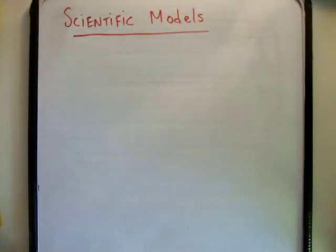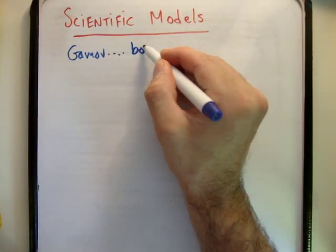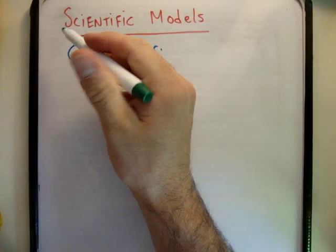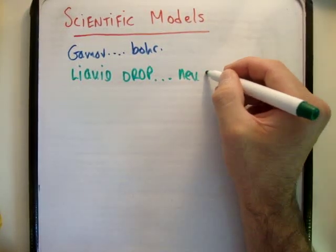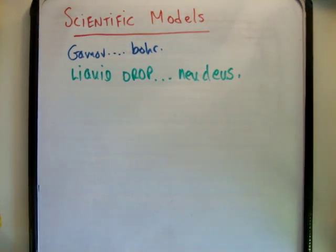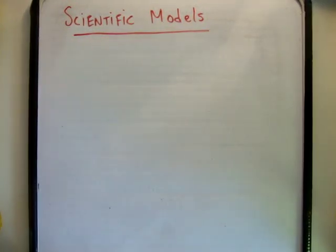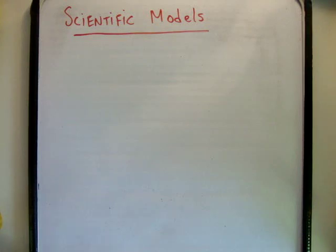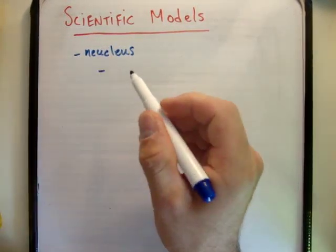Then a man called George Gamow, a Russian physicist, came along. Both Bohr and Gamow were part of this work, and what they decided to come up with was the liquid drop model of the nucleus. It was accepted that electrons orbit the central nucleus, so now they wanted to try and describe what happens inside the nucleus. The model they came up with — and I'm stressing that it is a model — was called the liquid drop model. The point was to try and fit experimental evidence; all they were trying to do was come up with a way of explaining what they were physically seeing in their instruments. What they said was that a nucleus behaves like a liquid.